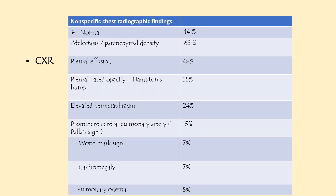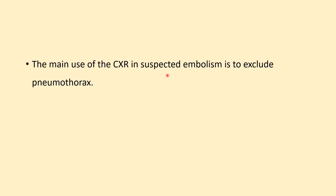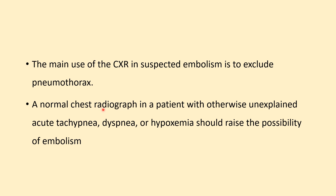So how is pulmonary embolism diagnosed on X-ray? In 14% of patients it is a normal X-ray. The majority of patients — almost 68% — show atelectasis or parenchymal density. Other representations include pleural effusion, pleural-based opacity or Hampton's hump, elevated hemidiaphragm, prominent central pulmonary artery, Westermark sign, cardiomegaly, and pulmonary edema. The main use of chest X-ray in suspected embolism is to exclude pneumothorax, as it can simulate the disease. If a patient has a normal X-ray with unexplained tachypnea, dyspnea, or hypoxemia, you should always consider the possibility of embolism.